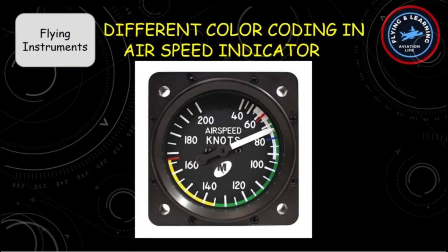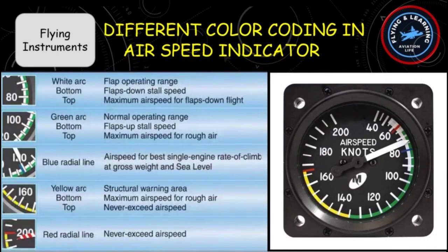The dial of the ASI is marked in different color codings: the white arc, blue line, green arc, yellow arc, and the red line. The white arc indicates the flap operating range. The blue line depicts the best rate of climb speed. The green arc is the normal operating range of the aircraft. The yellow arc is the caution range and structural warning area. The red line depicts the never-exceed speed of the aircraft.